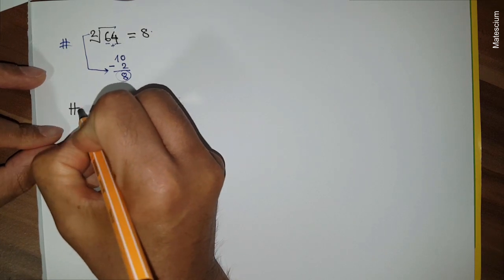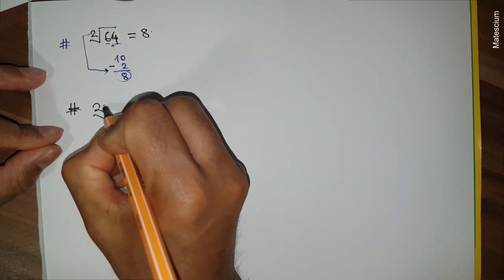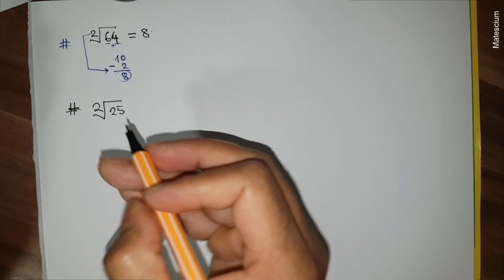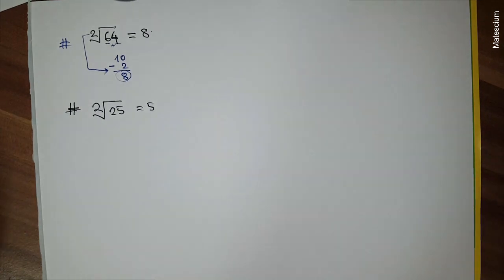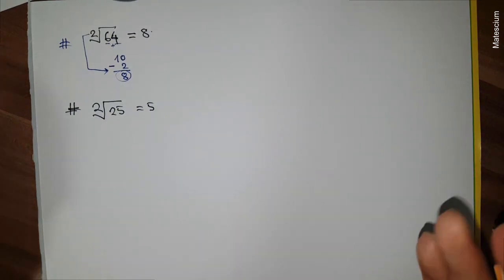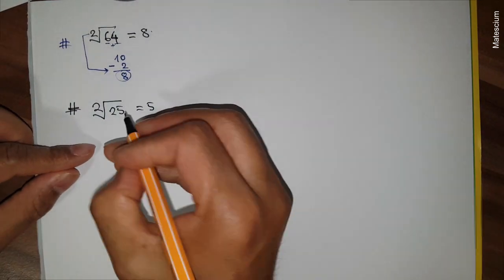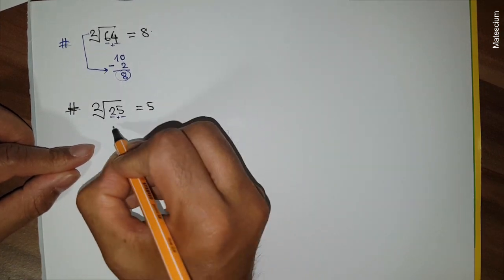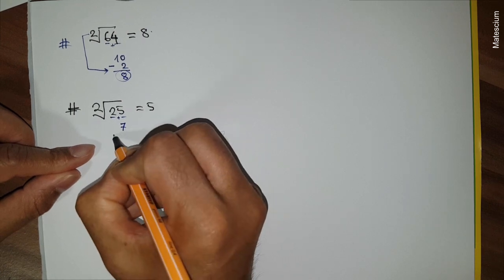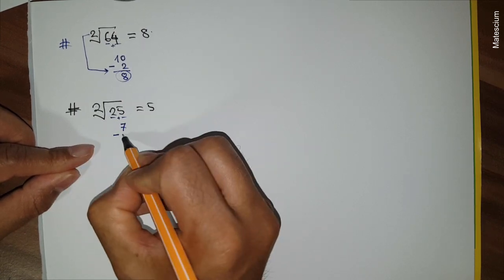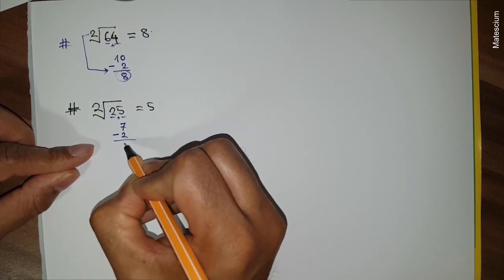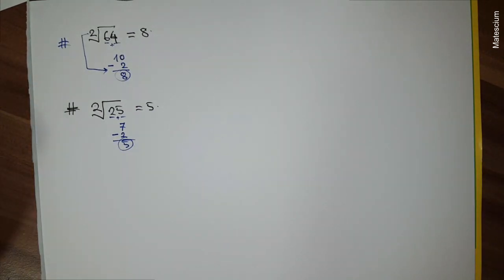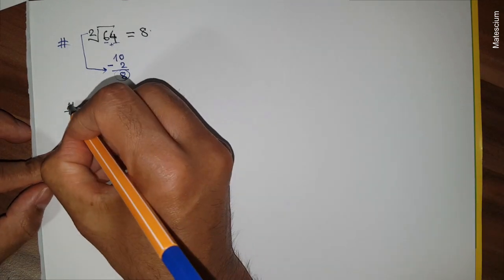Let's try with another example: 2√25. I know the answer is 5 — within one second I can find the answer. How is it possible? Similar way: 2 plus 5 is 7, and 7 minus 2 is 5. This 5 is exactly the answer.